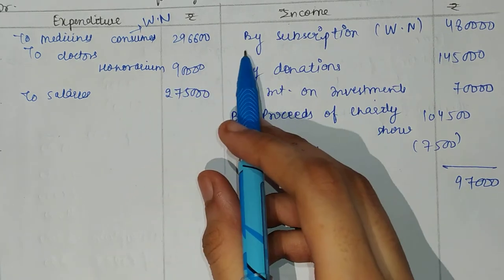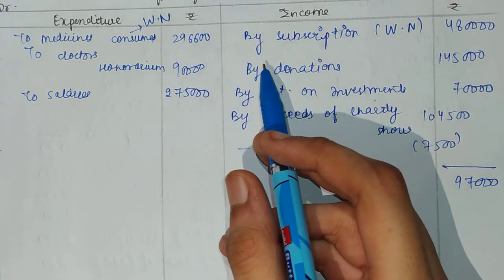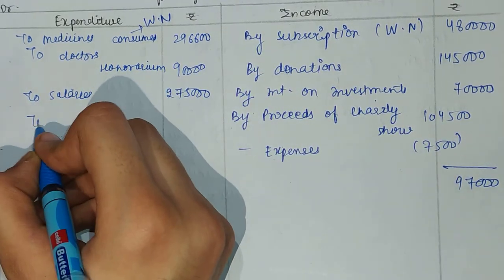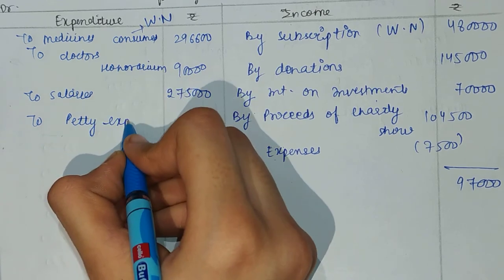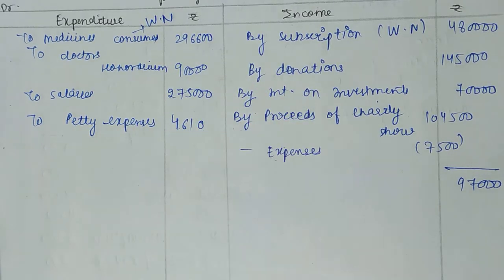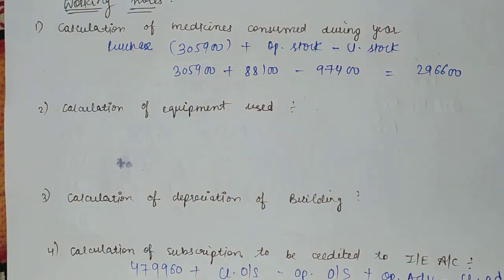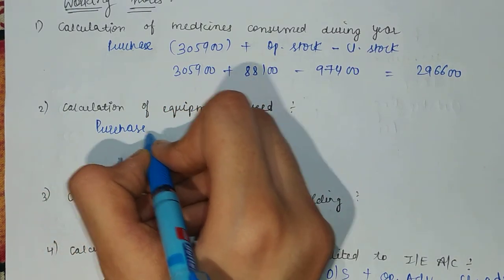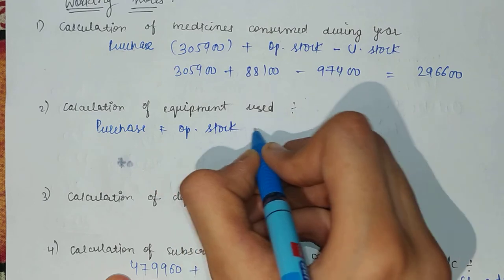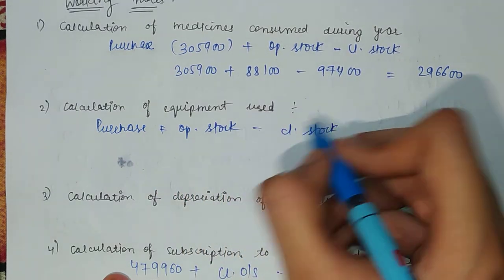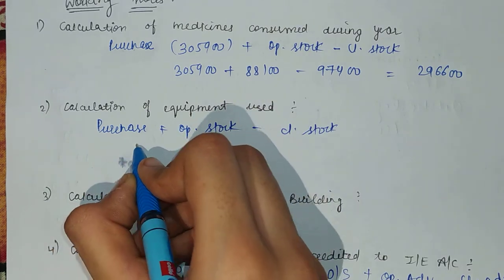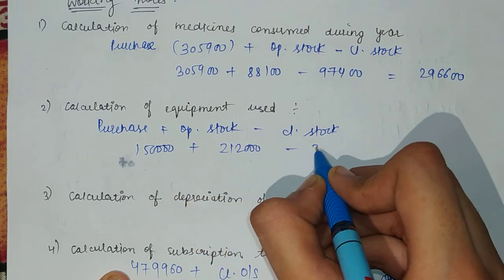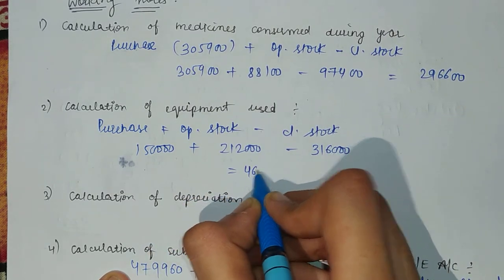Then we have doctor's honorarium amount, and salaries amount. After that, petty expenses — take them. Two petty expenses totaling $4,610. Next is the working note for equipment consumed. Look at the equipment — the purchases come in, and similarly opening stock is added and closing stock is deducted. The purchase amount is found from the receipts and payments account, and opening and closing values from additional information. If you solve it, you will get $46,000 for equipment consumed.